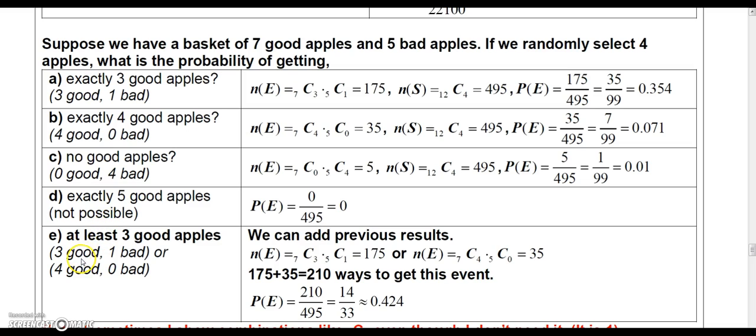Now, at least three good apples would mean that you have to calculate the probability of getting three good apples and one bad, or four good apples and no bad apples. So, all we have to do there is add the two probabilities together. So, up here, we know there's 175 ways to get three good apples and one bad, and there's 35 ways to get four good apples and zero bad. So, add those together, and we get 210 ways to get this event. And we divide it by 495,